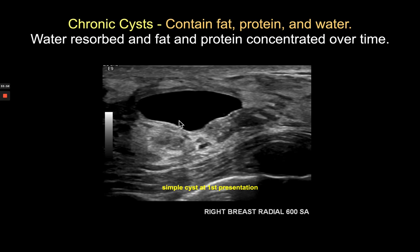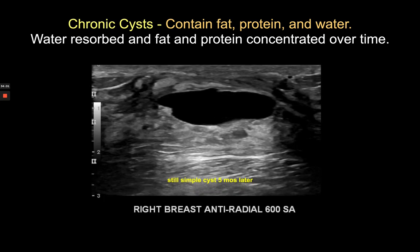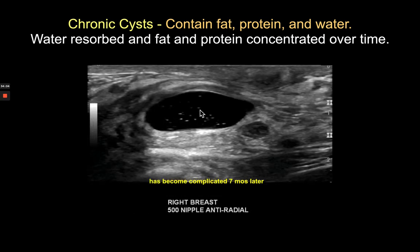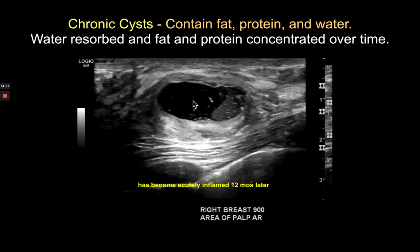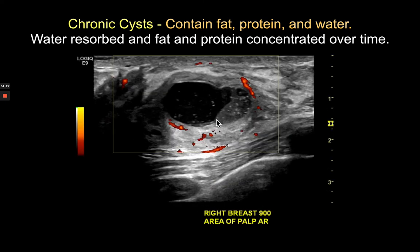Returning to the followed simple cyst: at five months it remains simple, at 12 months it's a little smaller with more concentrated, echogenic proteinaceous or fatty fluid. At two years, uniform isoechoic wall thickening has developed, the debris level represents pus, and there is hyperemia in the pericystic fluid. Over time, the fatty contents became more concentrated as water was resorbed through the cyst wall, and eventually the cyst became inflamed.